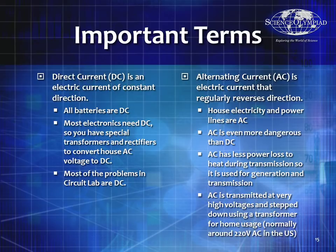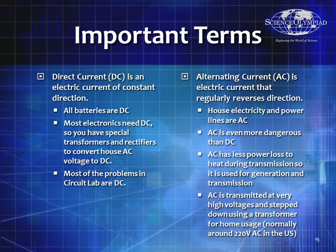Virtually all of the problems you're going to run into in CircuitLab are DC. However, alternating current is the electric current that regularly reverses direction. The electricity that comes into your house is AC, and it's a sinusoid. It's much more dangerous than DC, which is why so many people get electrocuted. AC has less power loss to heat during transmission, so that's why it's used for generation and transmission. It's also transmitted at very high voltages and has to go through many step-down transformers before it comes into your house — usually around 220 volts AC in the US.